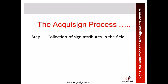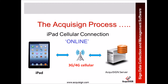The first step is a collection of sign attributes in the field. We typically use an iPad where data is downloaded from the Aquasign servers to the iPad when the app is initiated. That data is used to edit sign data in the field. You add new signs including photos, and that data is then saved. Every time it's saved, it also goes directly in real-time back into the Aquasign servers via the cellular connection.